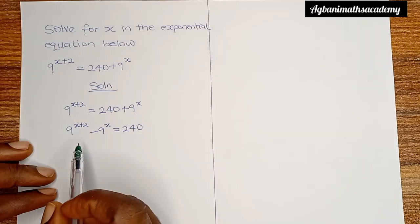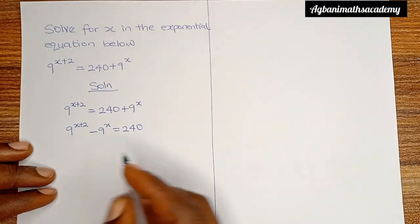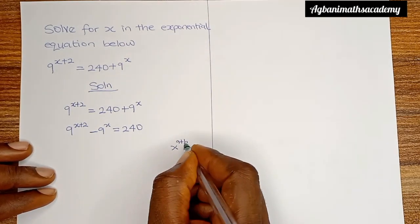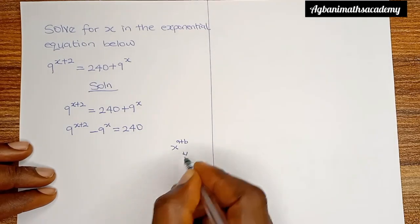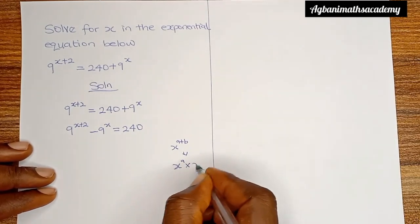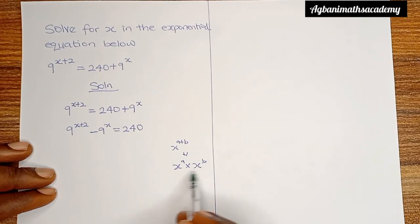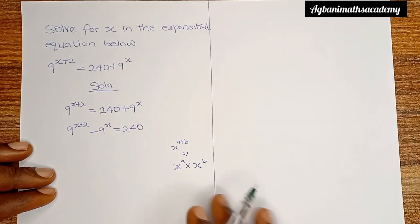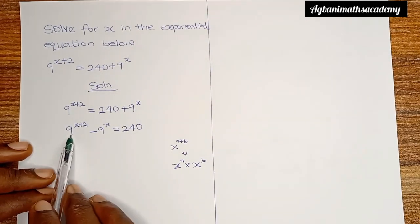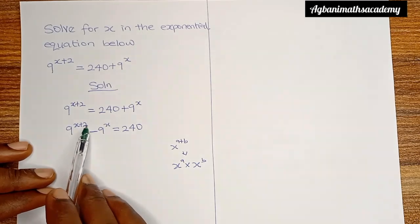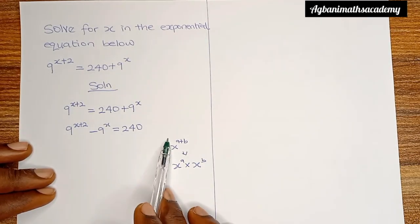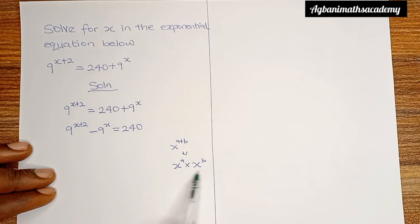Now let's look at some laws of indices. If we have x raised to the power a plus b, this is the same thing as x raised to the power a multiplied by x raised to the power b. This is the law of multiplication in indices, and we can apply it here. 9 raised to the power x plus 2 is similar to this form, so we can expand it.